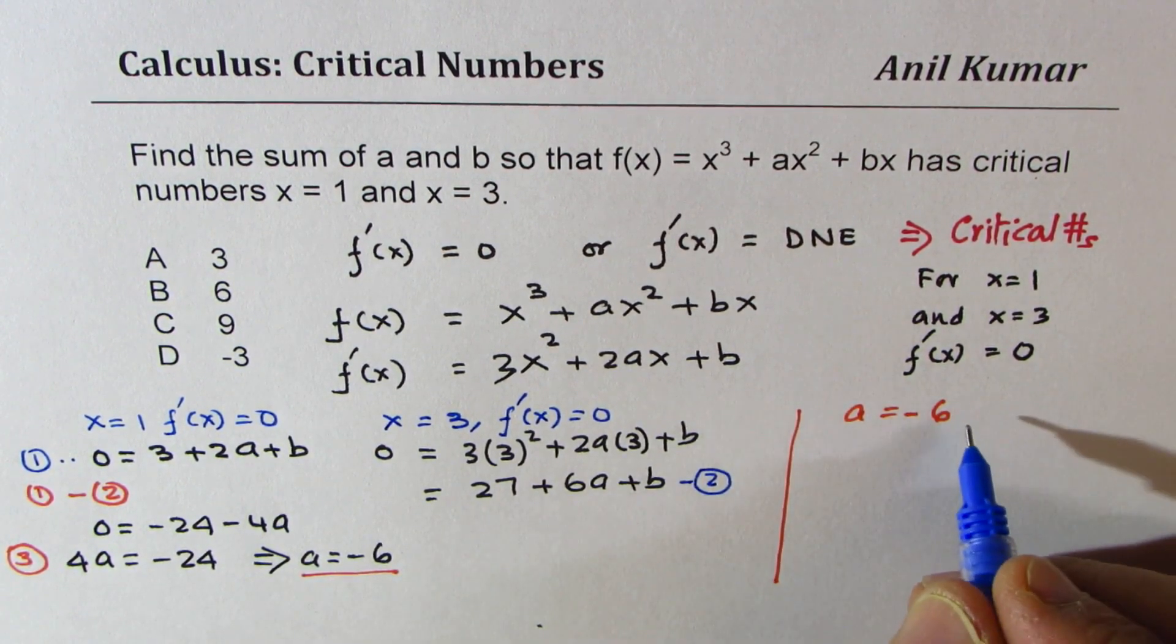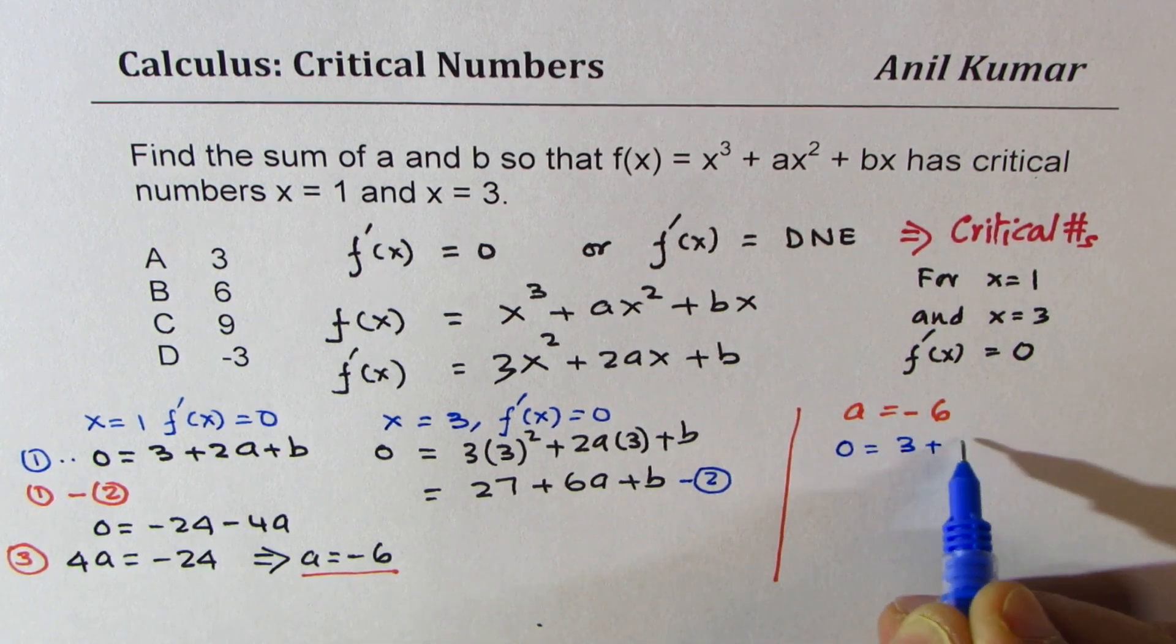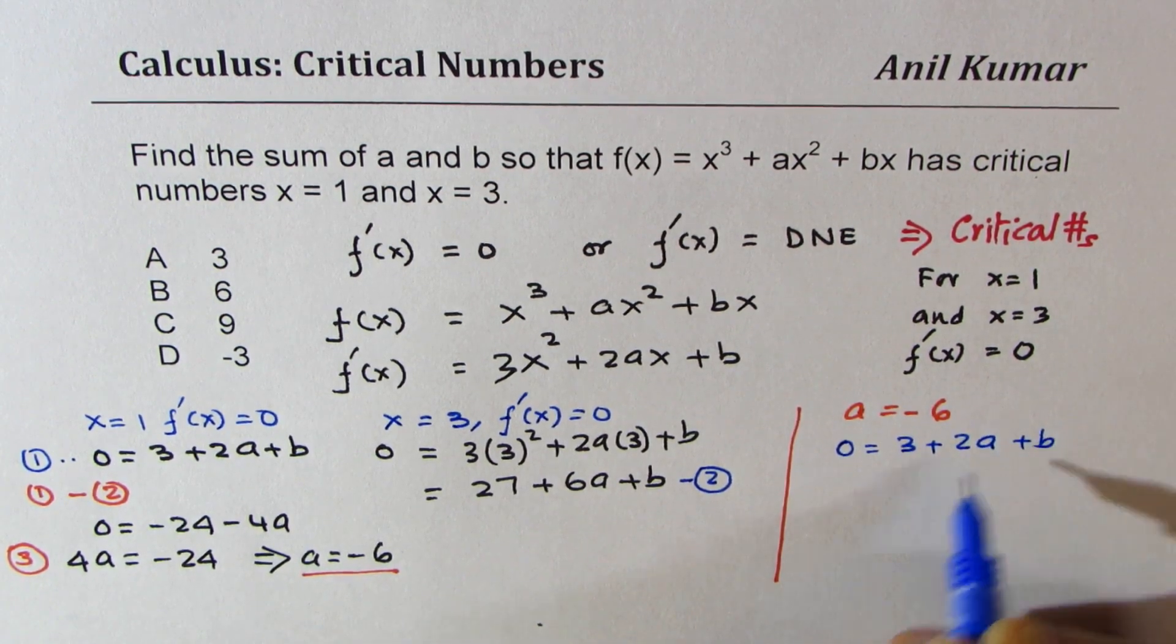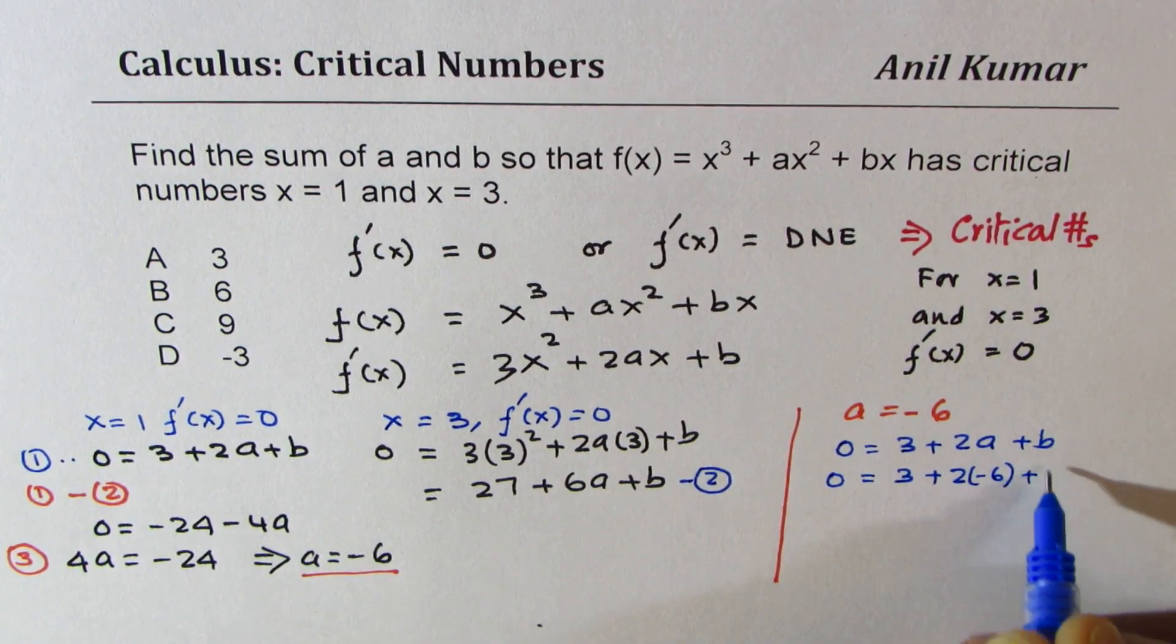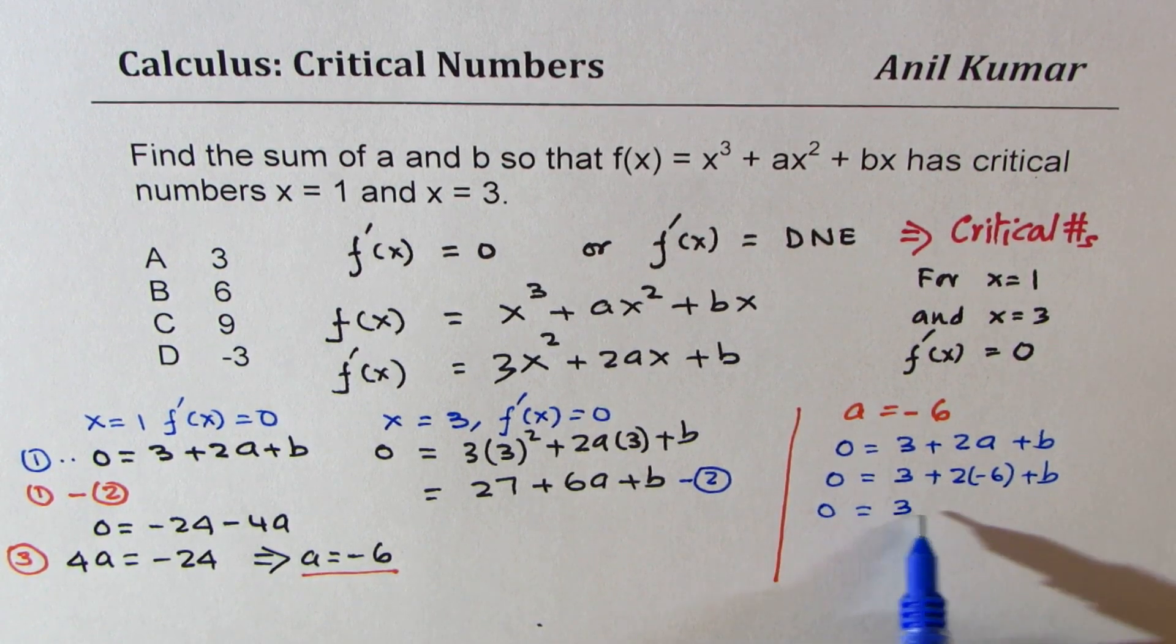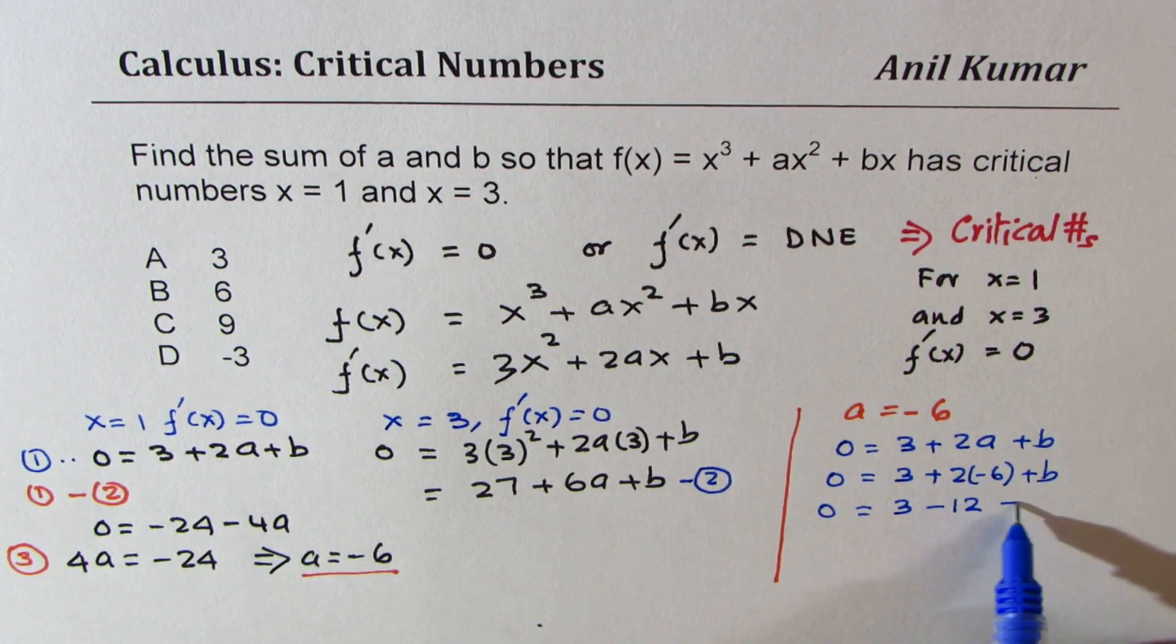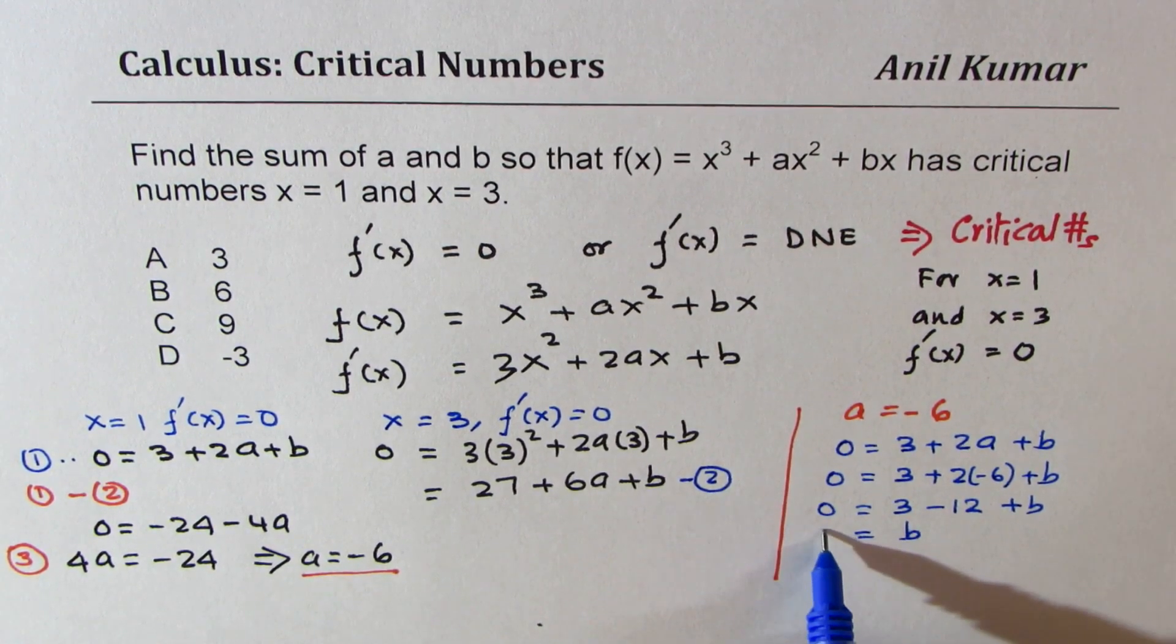We'll substitute this in the equation 0 = 3 + 2a + b. So we have 0 = 3 + 2 times -6 + b, so that gives you 0 = 3 - 12 + b, or b = 9, right?